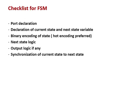What are the checklists for FSM? I have also explained this checklist in my last lesson on the Mealy FSM. The checklist includes: port declaration, declaration of current state and next state, binary encoding of states — where one-hot encoding is preferred because the probability of error is very less. One-hot encoding is also preferred in FPGA design. Then the next state logic, output logic, and synchronization of current state and next state.